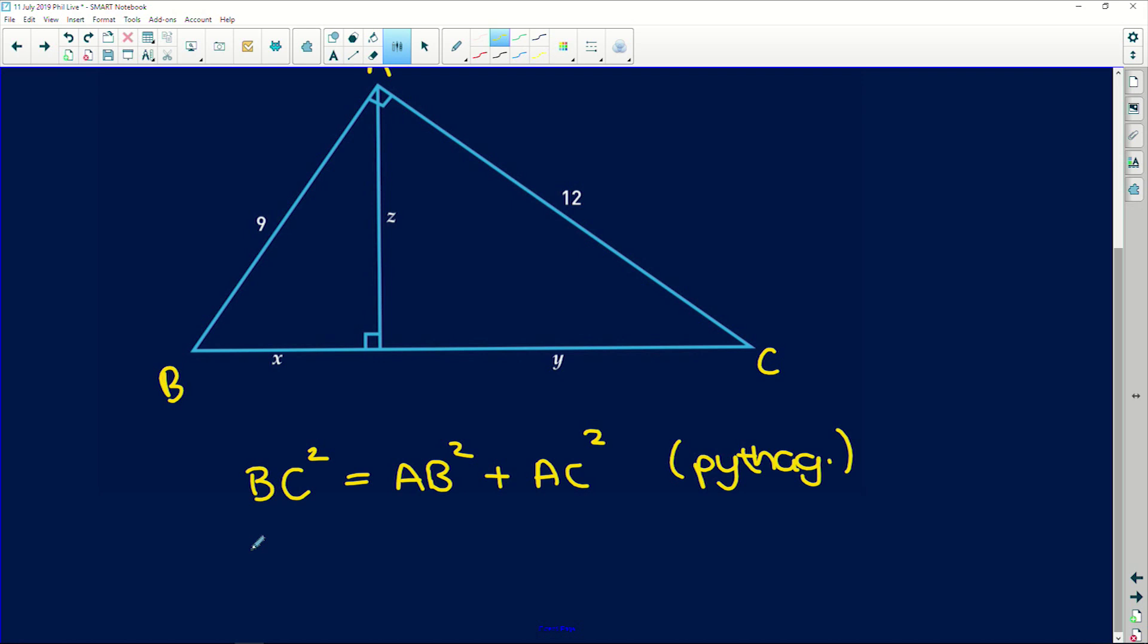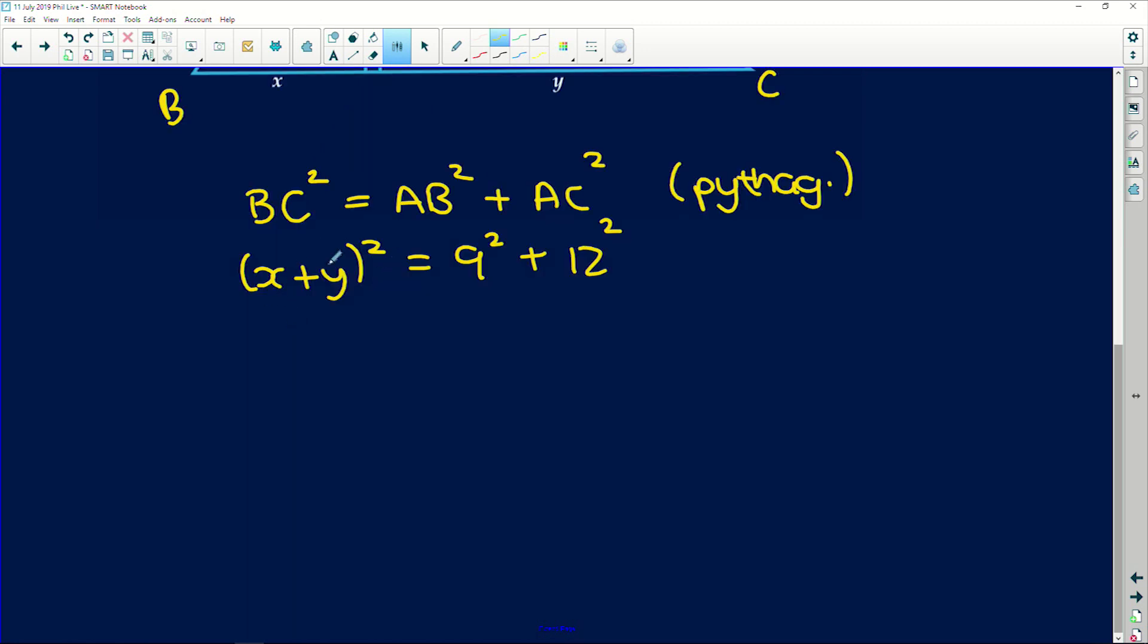Okay, which means that x plus y squared is equal to 9 squared plus 12 squared. If we square root both sides, we're going to get x plus y, which is part of what we're looking for, is equal to the square root of 9 squared is 81, 12 squared is 144. Okay, that simplifies to the square root of 225, which if you know your special square numbers is 15. So we have an expression for x plus y, it is 15.